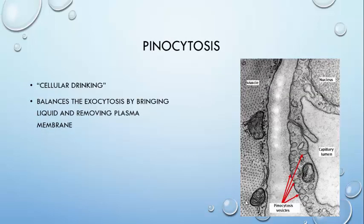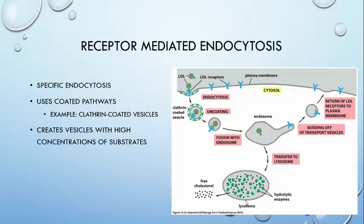The next ingestion method is called pinocytosis, or cellular drinking. In contrast to phagocytosis, this process occurs quite frequently. It takes in little bits of the surrounding environment through the creation of endocytic vesicles. This process acts as a balancing act to exocytosis, as exocytosis adds to the membrane and releases cytosol and other intracellular molecules into the extracellular matrix. The cell continually brings in liquid and removes the membrane added by exocytosis.